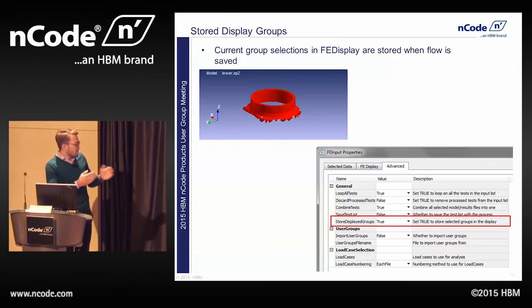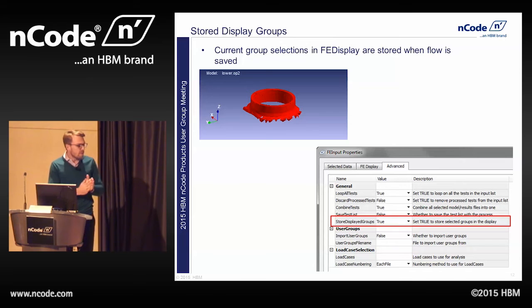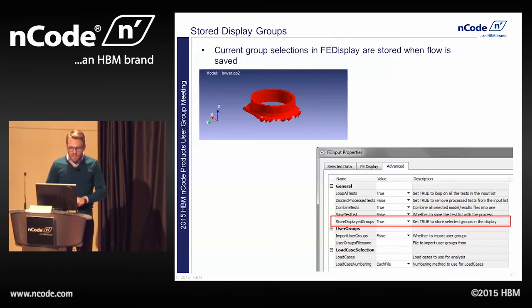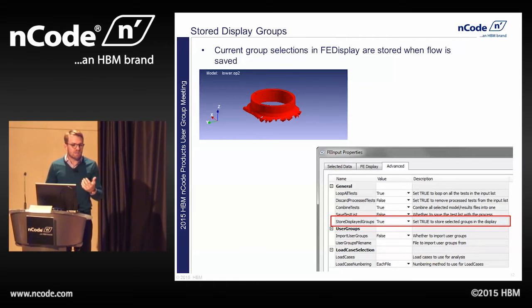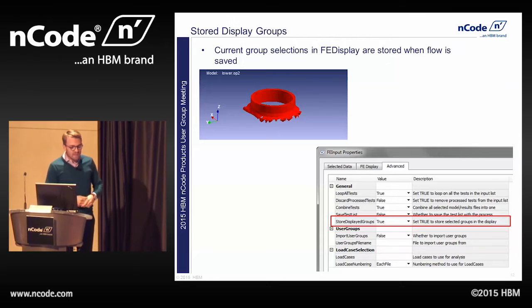This is new in version 11. We've done quite a few usability enhancements on our display clips. One of them is that you can now store display groups with your flow. If you open up a model and create a user group — say, highlighting a particular ring — in the FE input properties there is now an option called Store Display Groups. If you set that to true, this user group will be saved with that flow, so you don't have to re-import your groups every time you open the model.